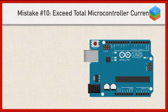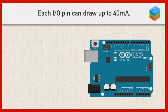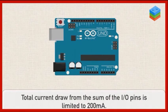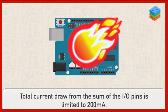The final way we'll talk about destroying or damaging your Arduino is if you exceed the total microcontroller current. Remember last week we talked about each individual I.O. pin can draw up to 40 milliamps. If you go over that, you can damage the pin. Well, if you exceed a total of 200 milliamps from any of the pins added together, then you can also damage the microcontroller.